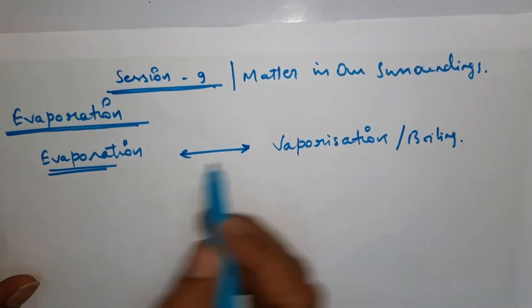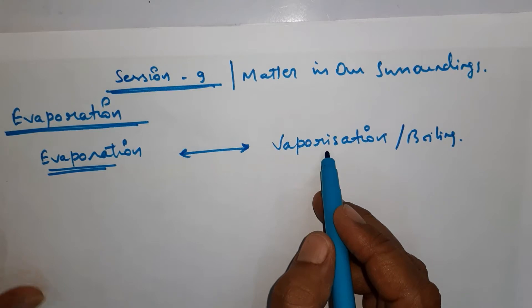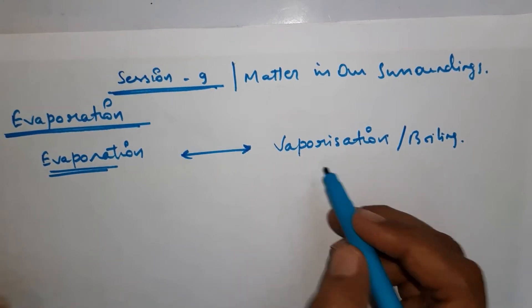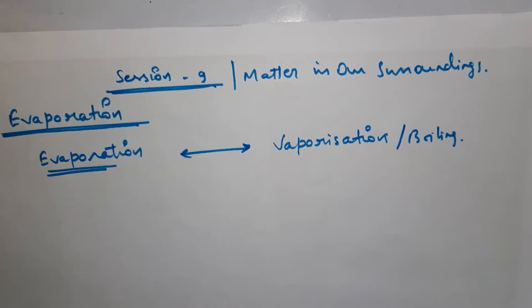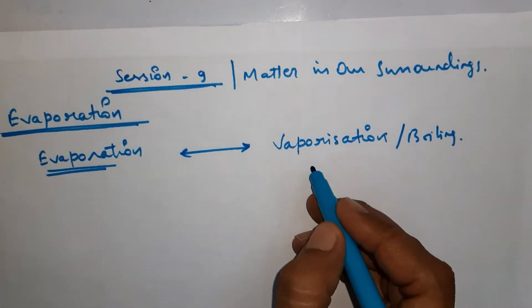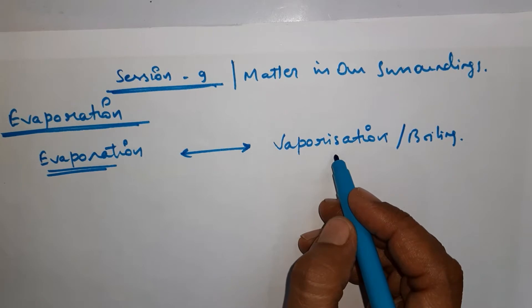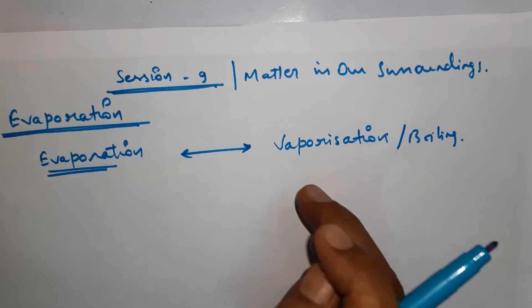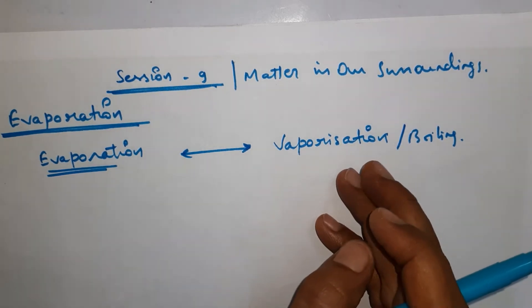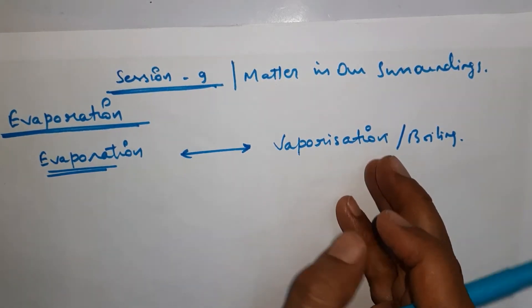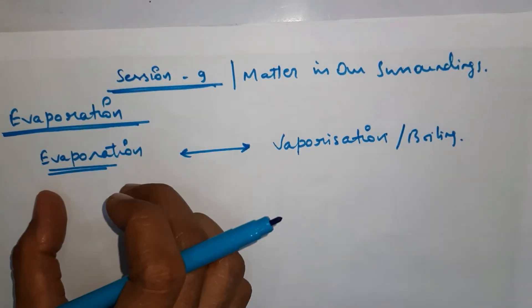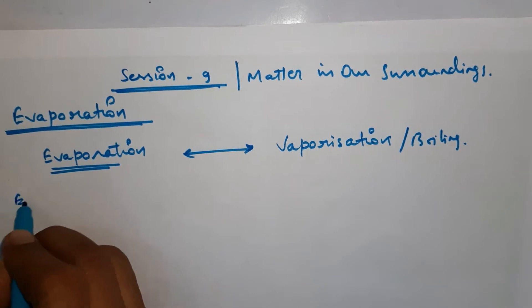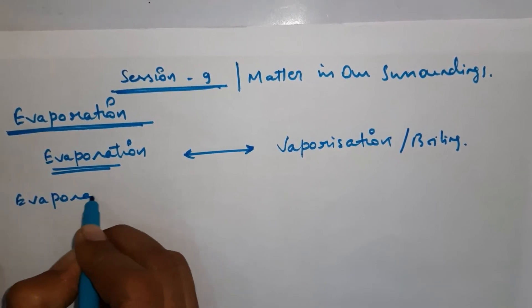In vaporization, there is a change of liquid to gaseous state after or during boiling. Once boiling starts, the change of liquid state to gaseous state is known as vaporization. But in evaporation, what happens during the process of evaporation is different.